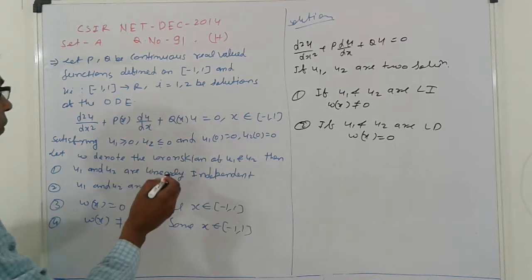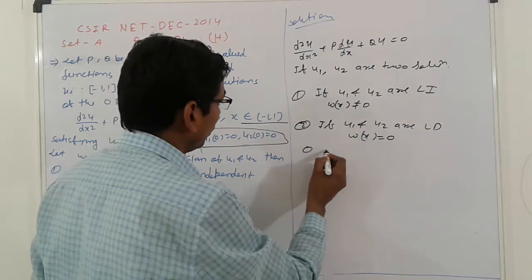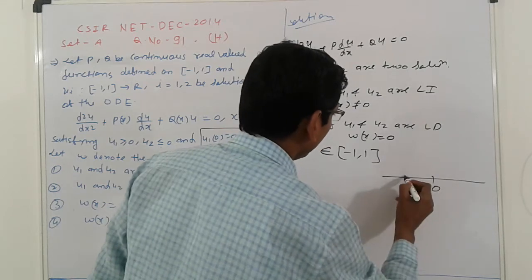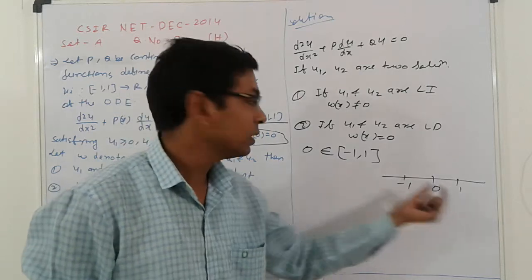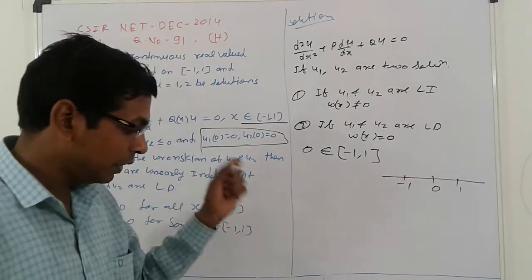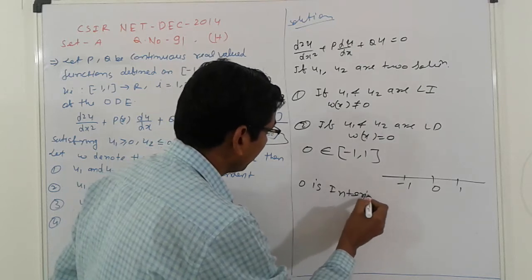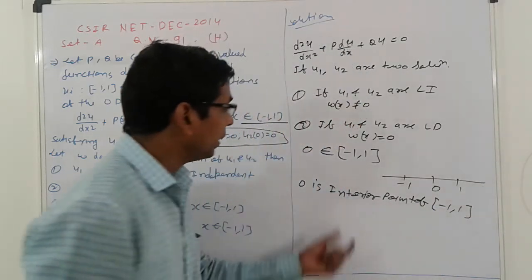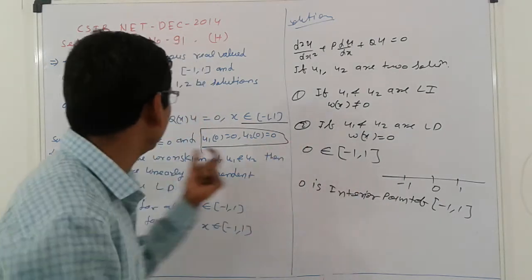The boundary conditions is given. Where is boundary condition? Here you come to that problem. And here it means 0, here X belongs to minus 1 to 1. It means that case here 0, here minus 1, here 1. That is minus 1, 0 and 1, it means lie between them. It means 0 of interior point of here. 0 is interior point of minus 1 to 1. So that case we can say that is point is 0, 0 here.